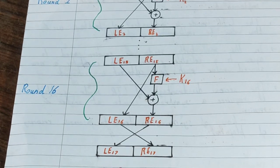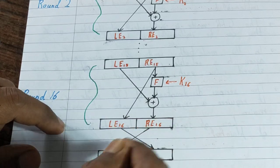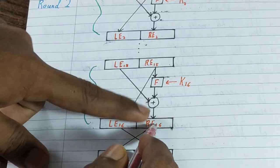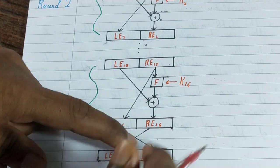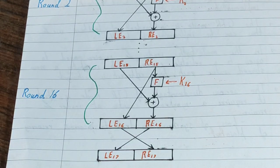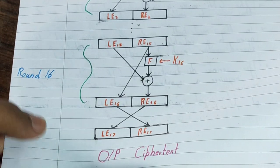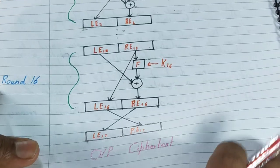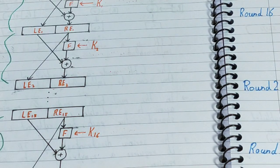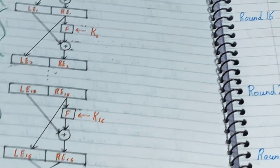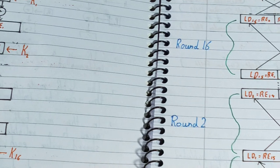In the last step after round 16, we just exchange the portions — the right part is made the left part, and the left part is made the right part. We just do the swapping for the last step, and that is termed as the output ciphertext. Once done, this ciphertext is passed online to the receiver — the one who wants it — and there we do the decryption.